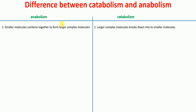Hello everyone, in this lecture today I am going to talk to you about the differences between catabolism and anabolism. Anabolism is a metabolic process in which smaller molecules combine together to form larger complex molecules.